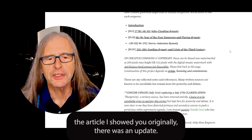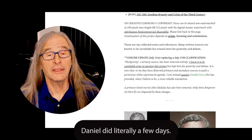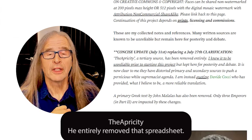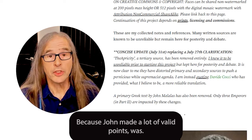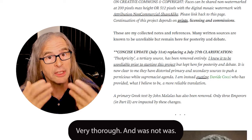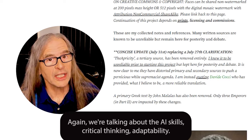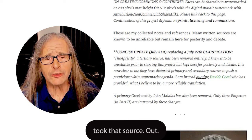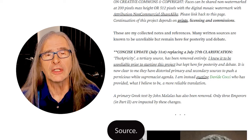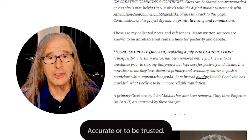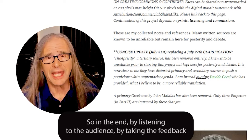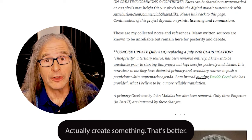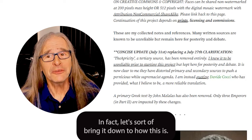This is one of the greatest lessons if you're doing gen AI or creating anything: listen to your audience. At the top of the original article there was an update Daniel posted just a few days after the critical article came out. Because of that source, he entirely removed the spreadsheet, because John had made a lot of valid points and was very thorough. We're talking about AI skills — critical thinking, adaptability. John gave him input, and the beauty is Daniel took it in, removed that source from the photos, and also removed another source that John correctly said was not accurate or trustworthy. By listening to the audience and taking feedback — not just from AI but human feedback — you're able to create something better.